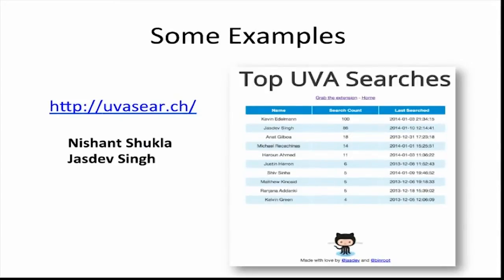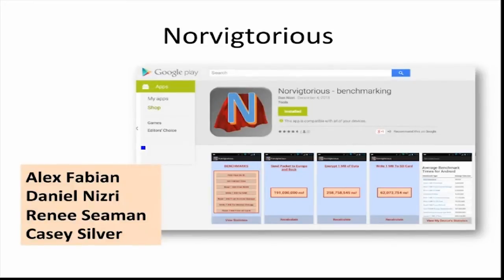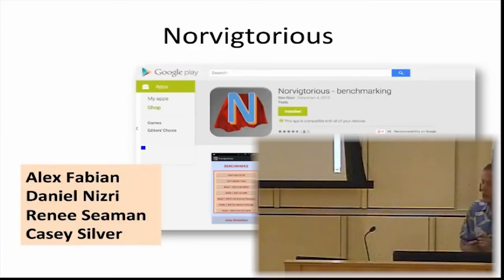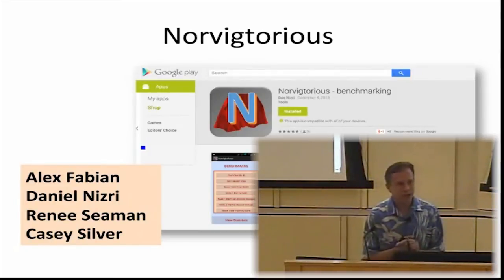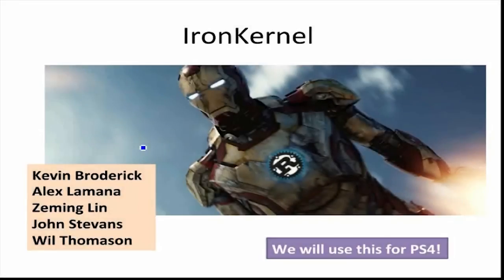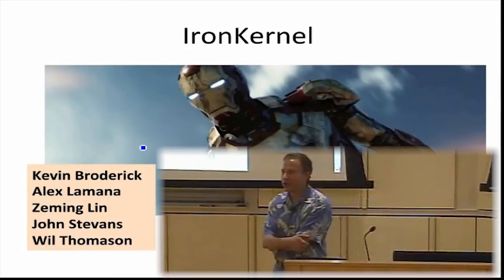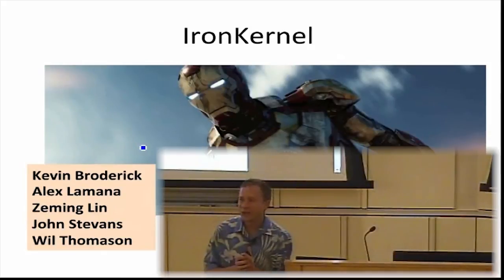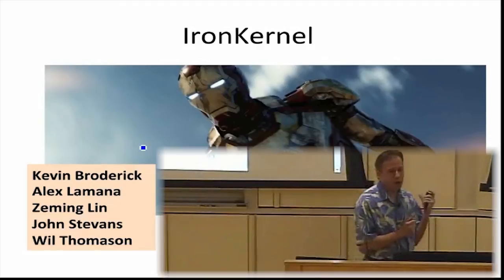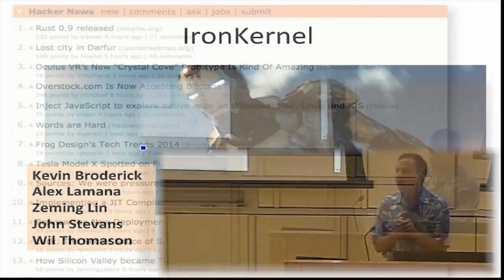Another project is about understanding the cost of different operations. The difference in the amount of time it takes to read some data might be billions of times more expensive than reading some other data. There's a web page Peter Norvig made looking at some of these costs from more than 10 years ago. These students built an Android app that would compute the cost of various operations and collect that data. The next one is what we're actually going to use for problem set four: last semester a group built a simple kernel using Rust.